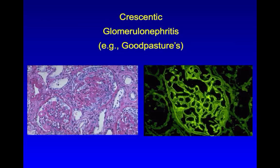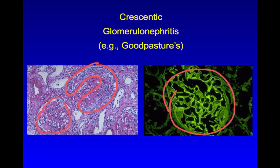With crescentic GN, a normal glomerulus is squeezed out by the formation of a multilayered crescent inside Bowman's capsule. This can be associated with linear antiglomerular basement membrane antibodies in diseases such as Goodpasture's.